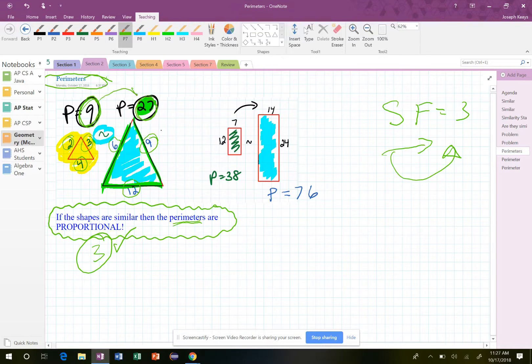And this is what we're talking about here. Hopefully you can recognize there's a relationship between the sides and the perimeter. Capital P here stands for perimeter. Notice 27 divided by 9 is 3. Notice the perimeters have a scale factor of 3.